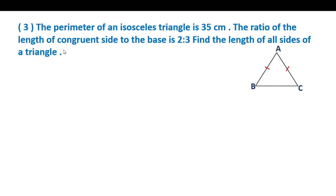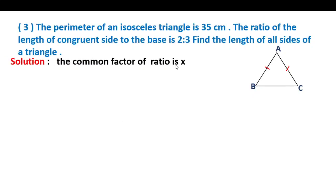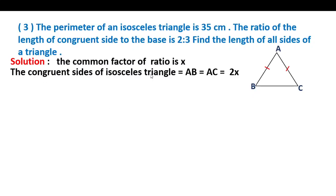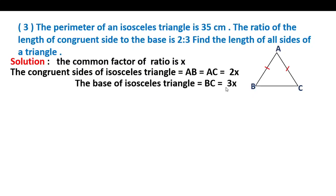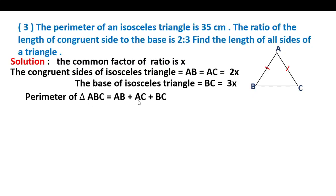The ratio of the congruent sides to the base is 2 is to 3, so the congruent sides are 2x and the base is 3x. Solution: the common factor of the ratio is x. Therefore the congruent sides of the isosceles triangle AB = AC = 2x, and the base BC = 3x. So the two top sides are 2x each and the bottom base is 3x.